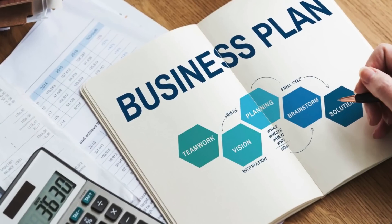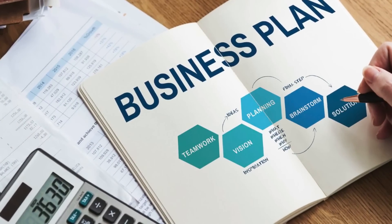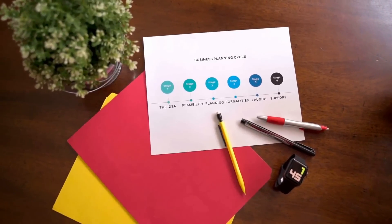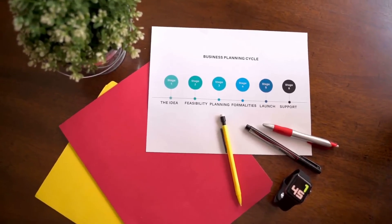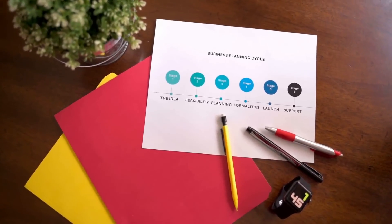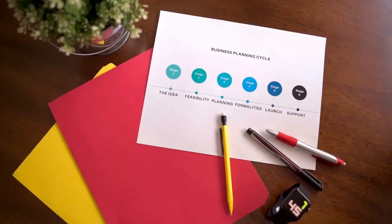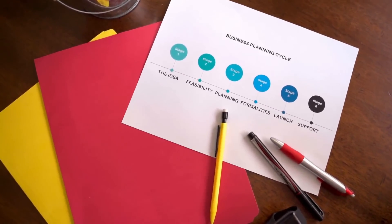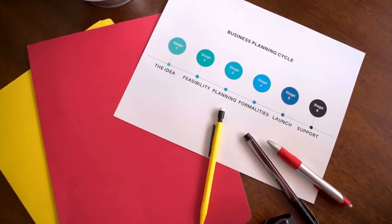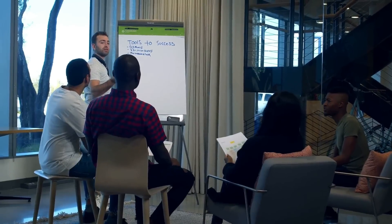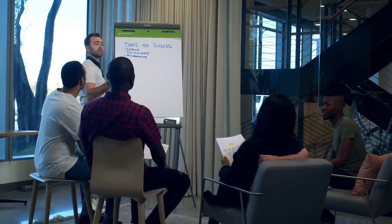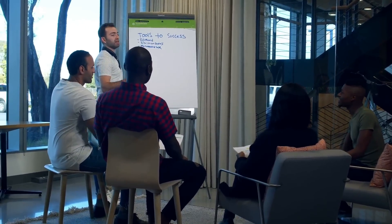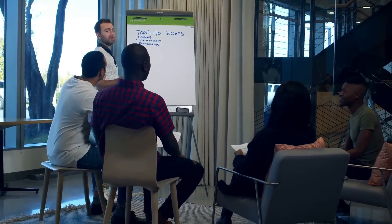Step 2: Develop a Business Plan. Once you have identified your business idea, you need to develop a business plan. This plan will act as a roadmap for your business and will help you stay focused on your goals. Your business plan should include your business objectives, marketing plan, financial projections, and a SWOT analysis.